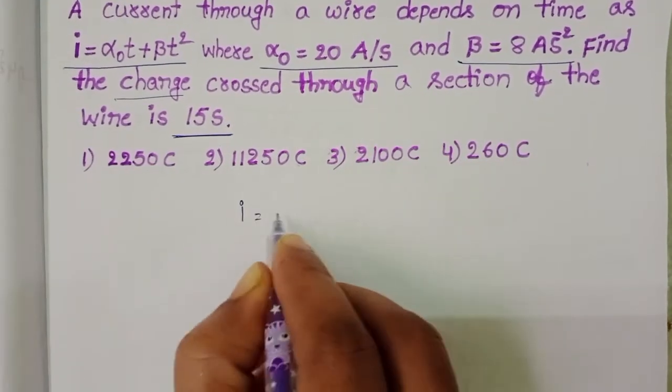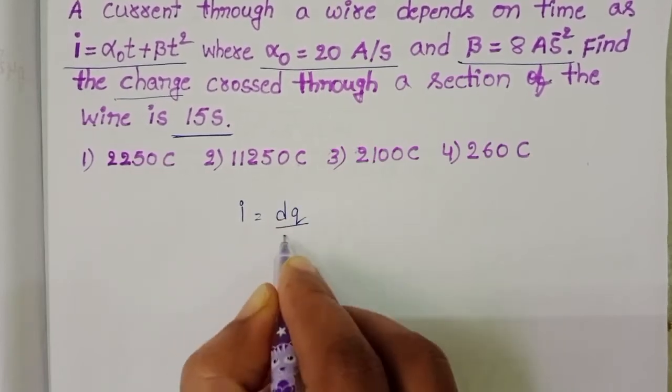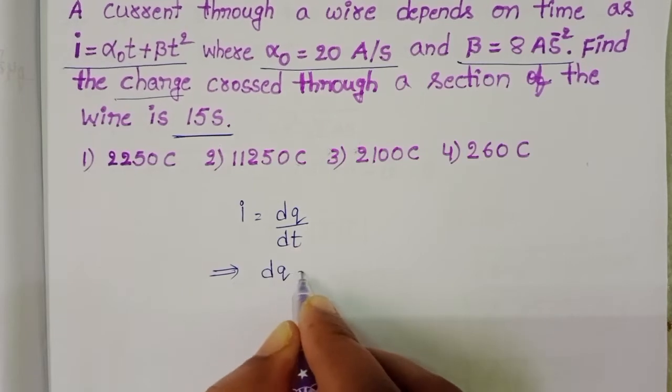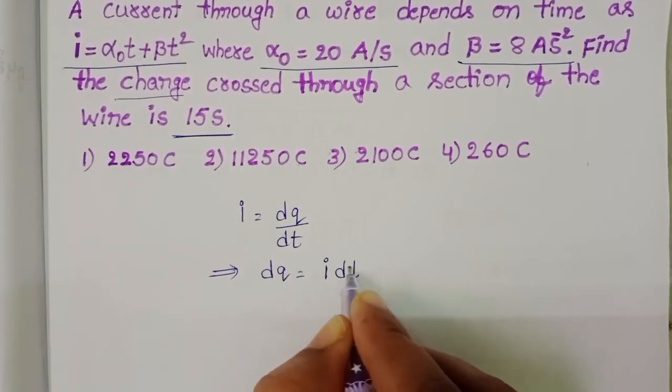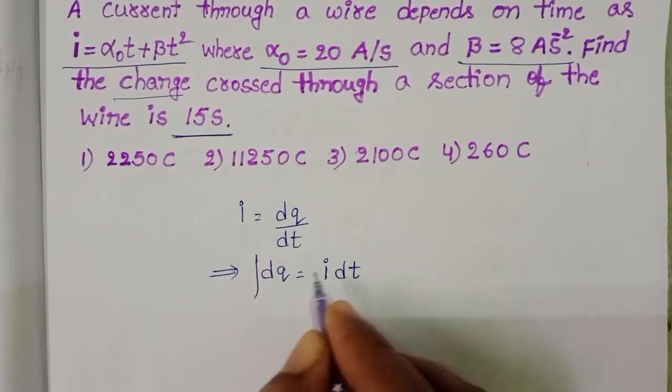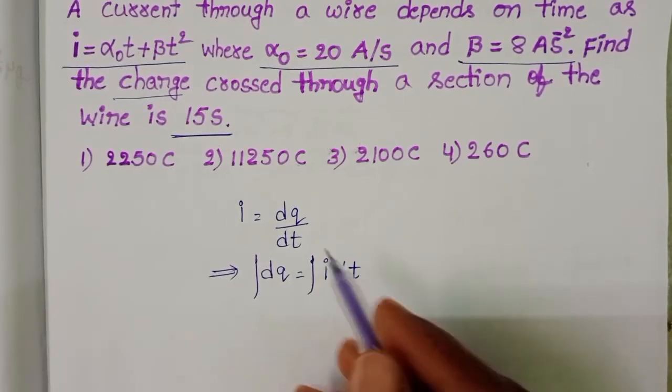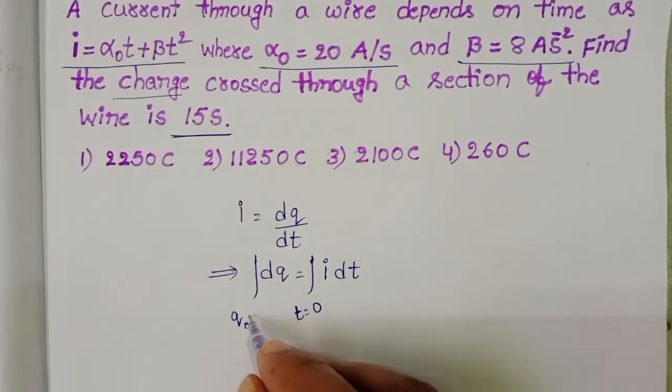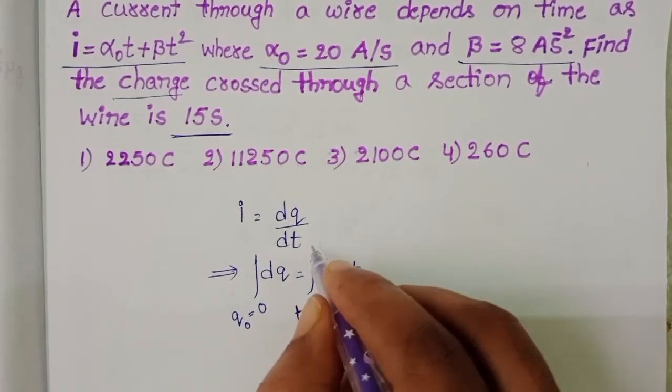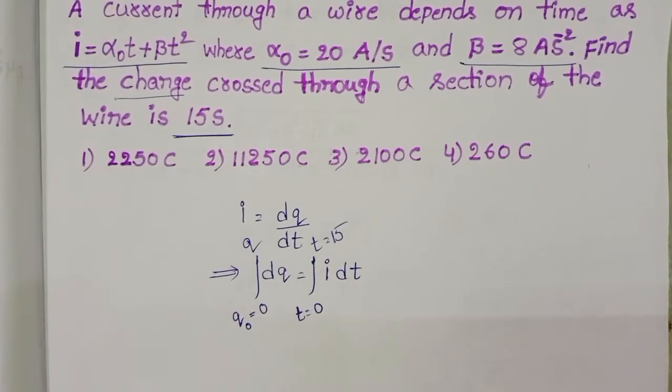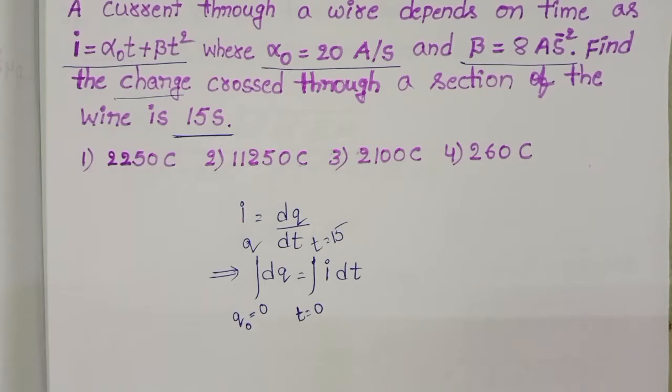We know electric current I equals dQ by dt, and from this dQ equals I into dt. Take integration on both sides. Here limits from when time equals zero, the charge passing through the given wire is zero, and when time equals 15 seconds we have to find out the charge passing through the given wire.